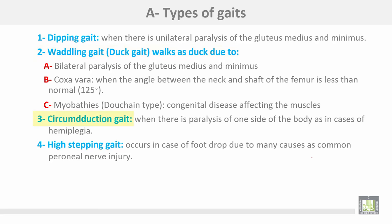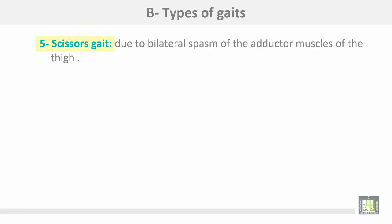Number three: circumduction gait, which occurs when there is paralysis of one side of the body as in cases of hemiplegia. Number four: high stepping gait, which occurs in cases of foot drop due to many causes such as common peroneal nerve injury. Number five: scissors gait, due to bilateral spasm of the adductor muscles of the thigh.